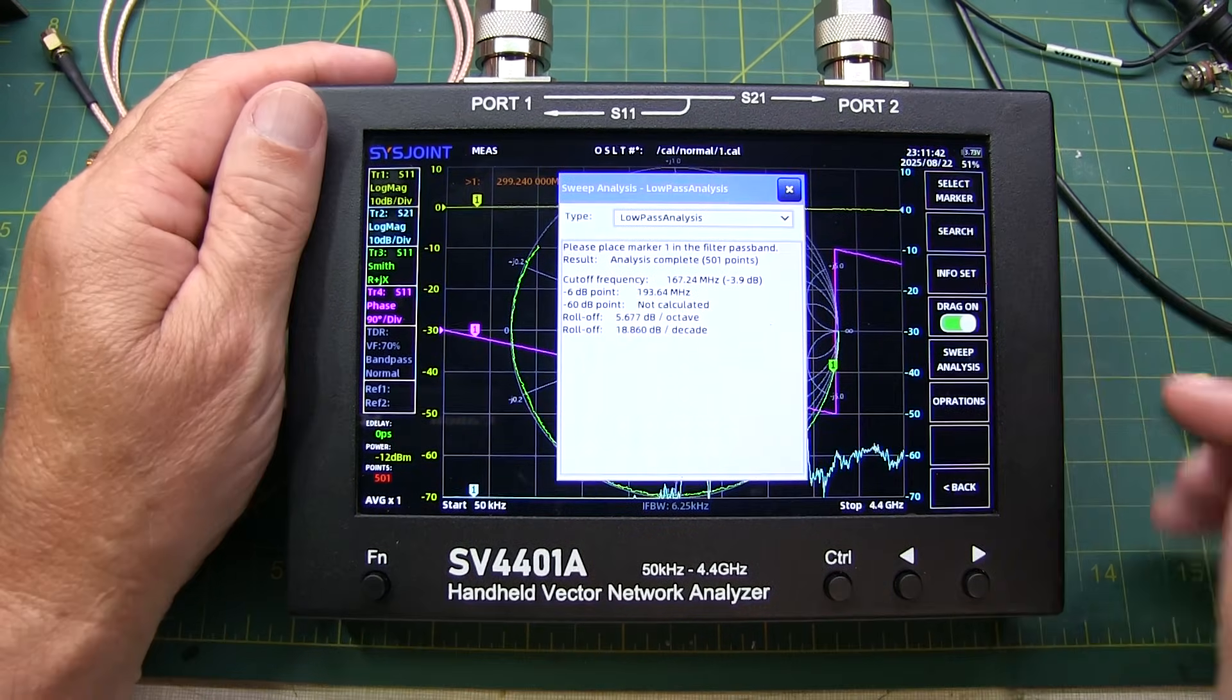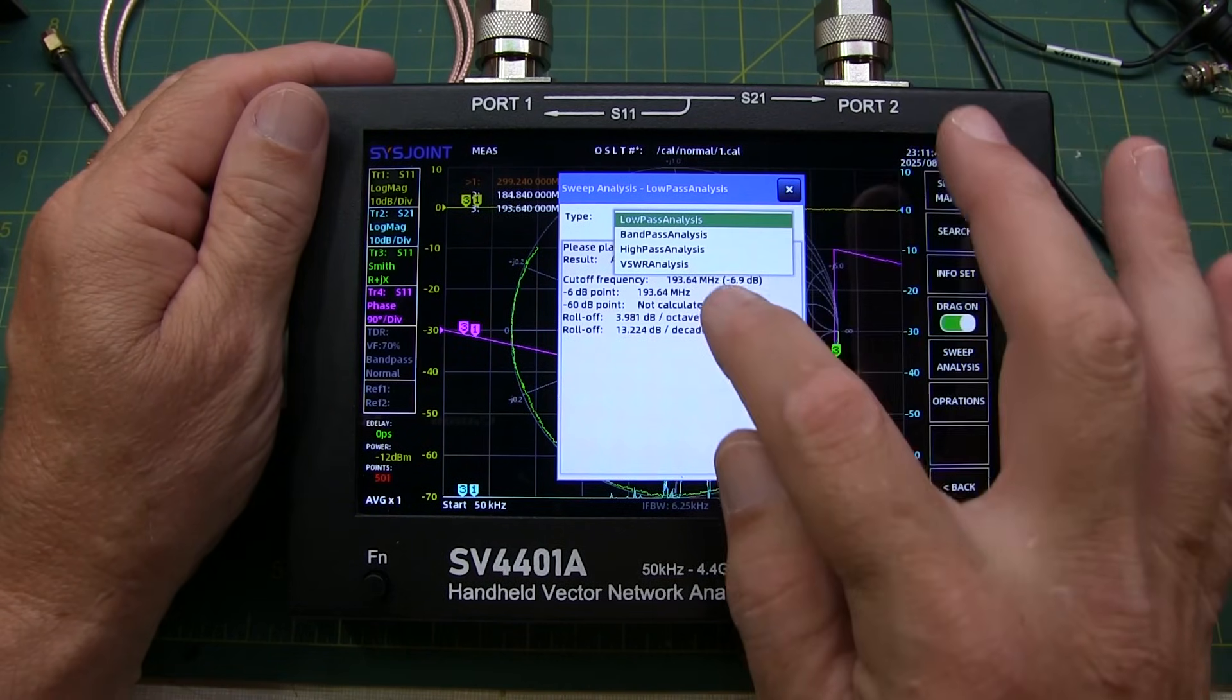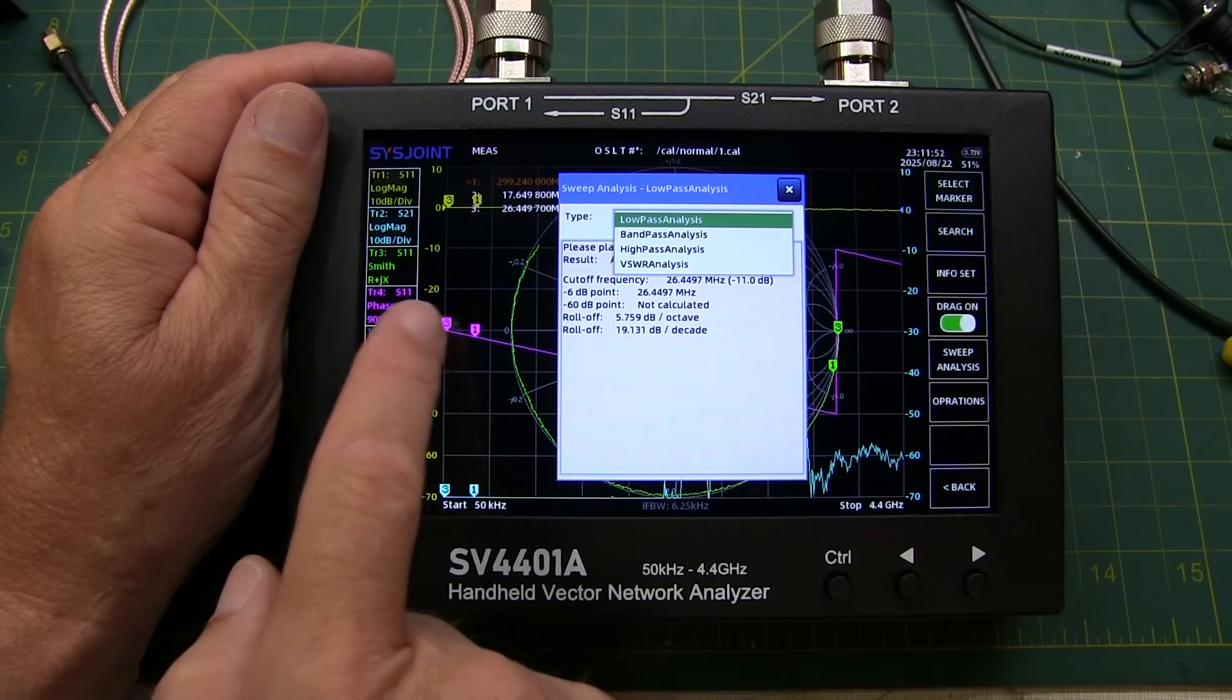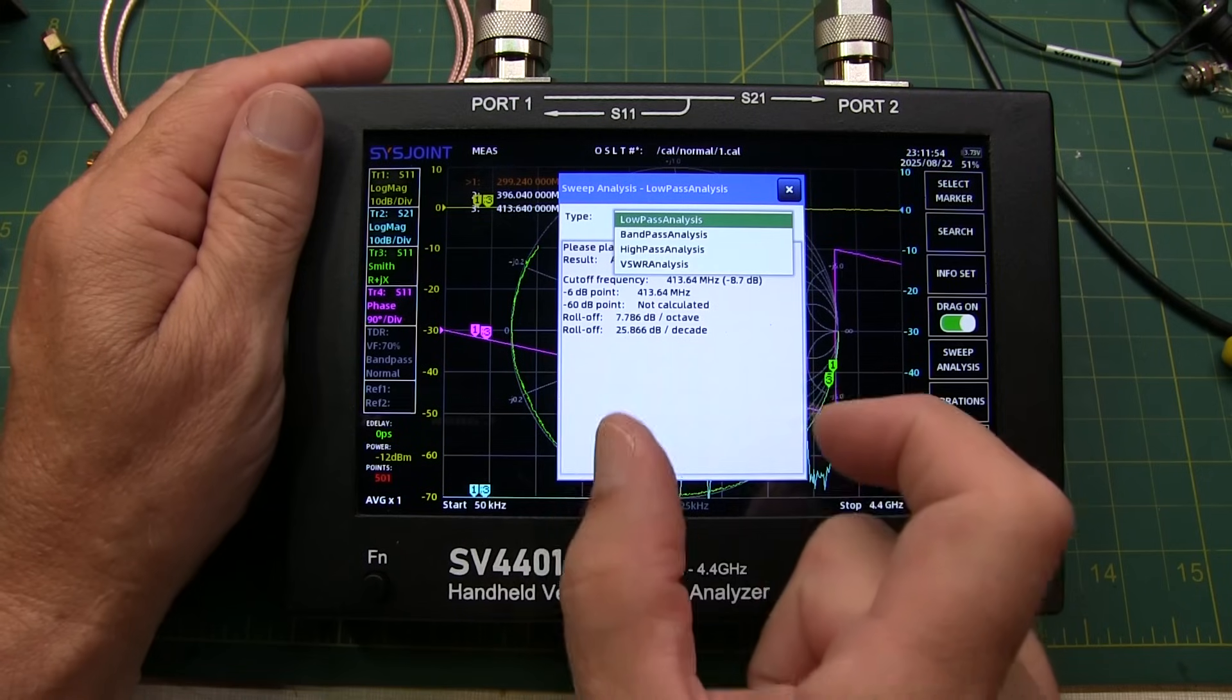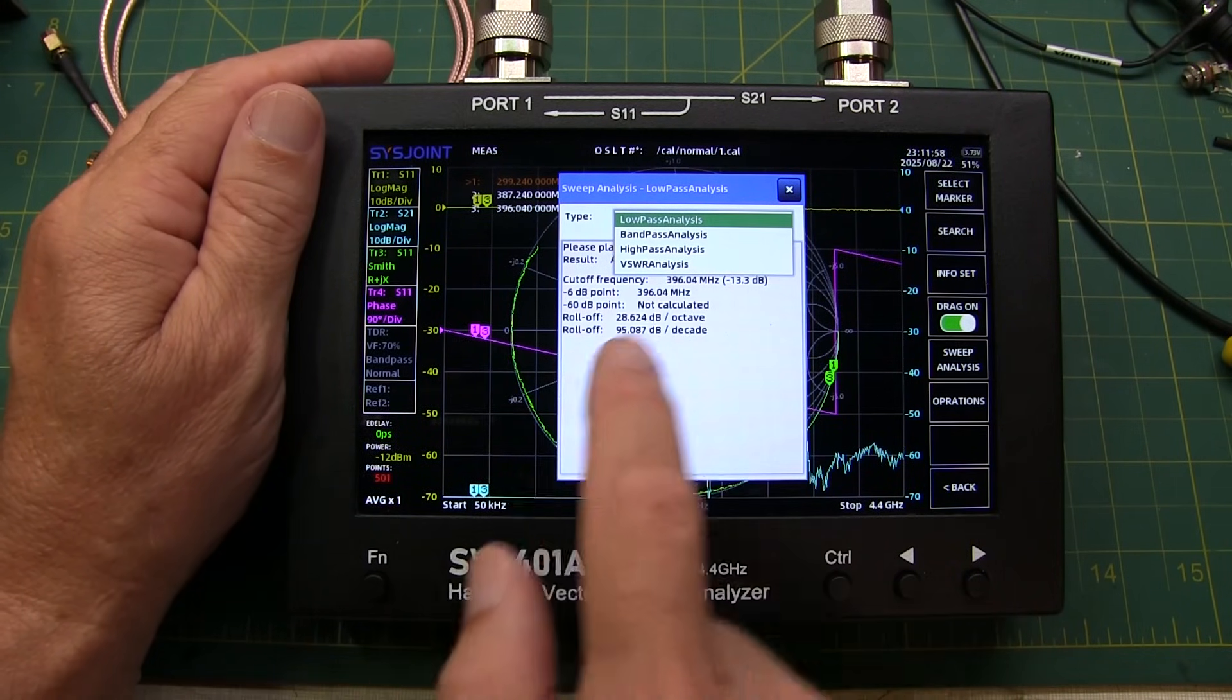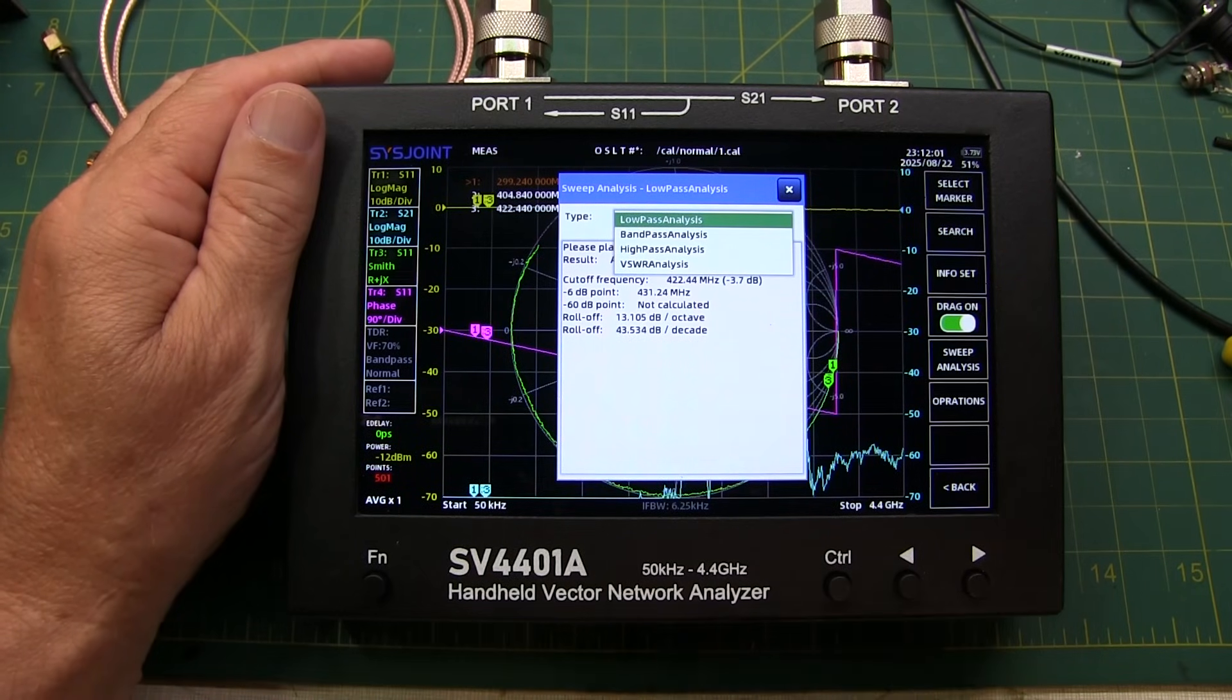The sweep analysis allows you to do things like low pass, band pass, high pass, and SWR analysis by moving markers in particular locations and then have the result like the 3 dB bandwidth for the filters or say a 2 to 1 SWR bandwidth. You can have that measurement performed for you automatically.